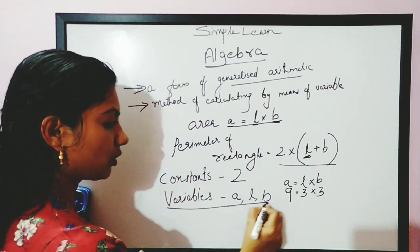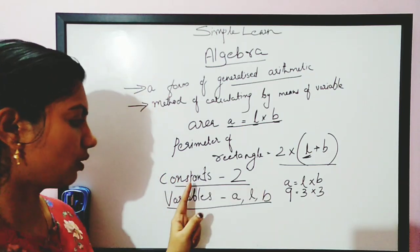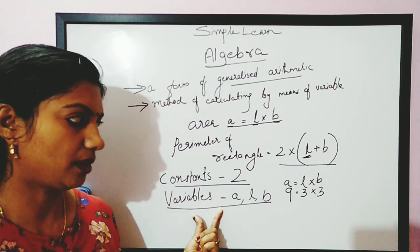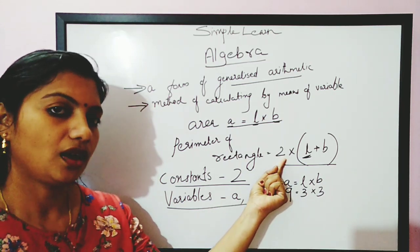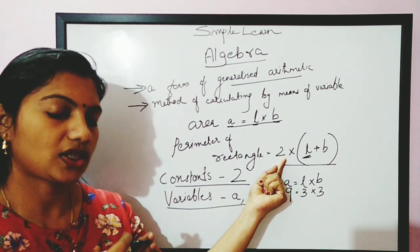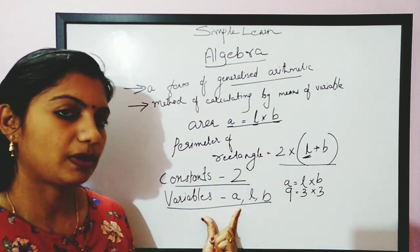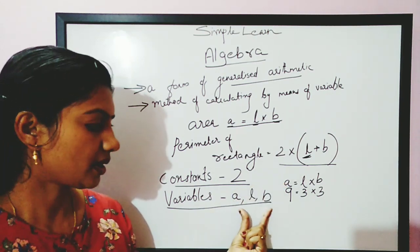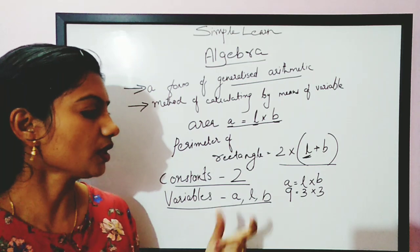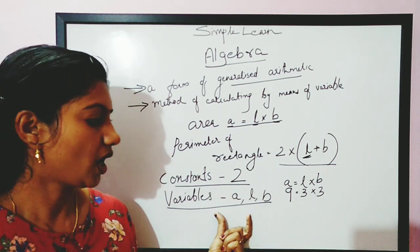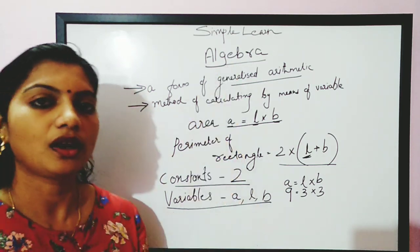So you understood the concept of constants and variables. Constants are things which do not change their value. Variables are things which keep changing their value. These two are important when we learn algebra.